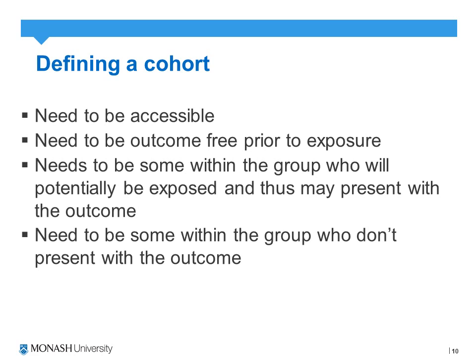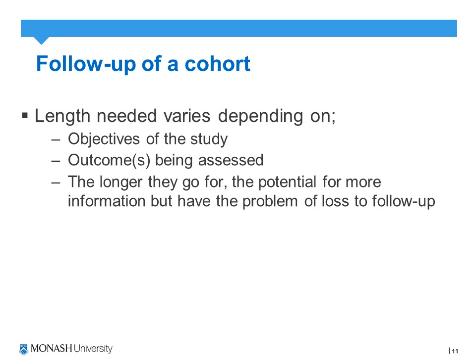In the previous example, the cohort was women in their first trimester of pregnancy. The cohort needs to be accessible and outcome-free prior to exposure. Within the sample we identify those who have potentially had the exposure and those who have not. The follow-up period varies depending on the study objectives and outcomes being assessed. The longer the follow-up period, the more prone a cohort study — as well as a randomised control trial — is to the potential for dropouts, withdrawals, or attrition bias.